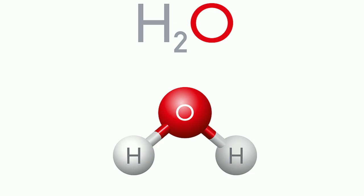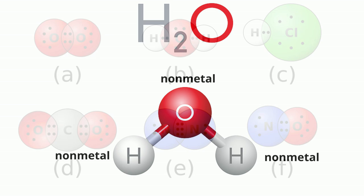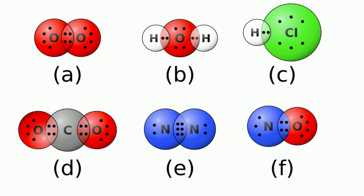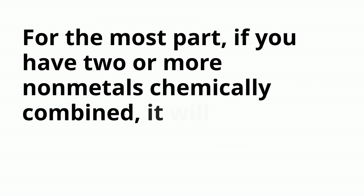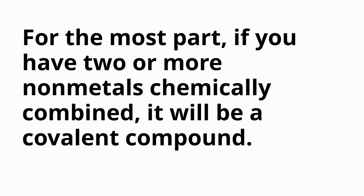Covalent compounds generally result from two non-metals reacting with each other. The elements form a compound by sharing electrons, resulting in an electrically neutral molecule. For the most part, if you have two or more non-metals chemically combined, it will be a covalent compound.